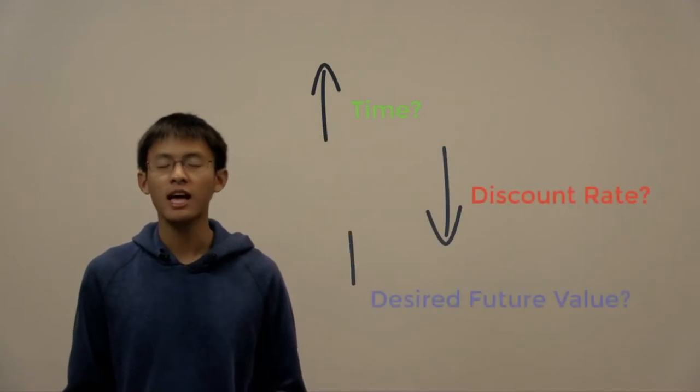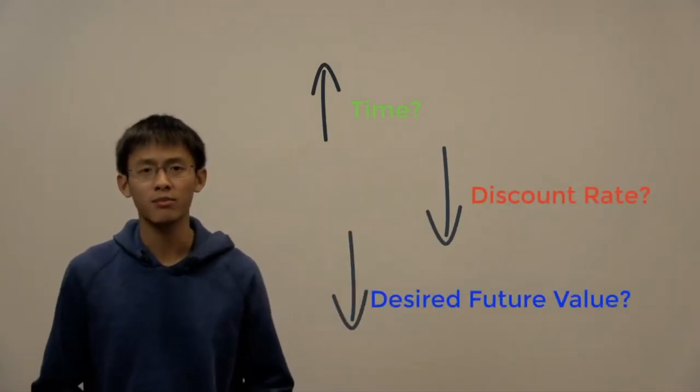Now that you are comfortable using these formulas to calculate present value, today we will be stepping back to ensure that we really understand how changing these variables in the PV formula, like pulling on different levers, affect the PV calculated.